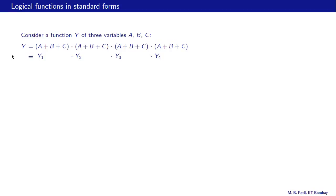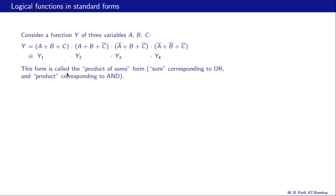Now let us look at an alternative form. Consider a function Y of three variables a, b, c written as Y = Y1·Y2·Y3·Y4, where Y1 = a+b+c, Y2 = a+b+c̄, and so on. This form is called the product of sums form because it looks like a product — AND operation — of sum terms, each of which uses OR. We can construct the truth table for Y just as we did for the sum of products form.